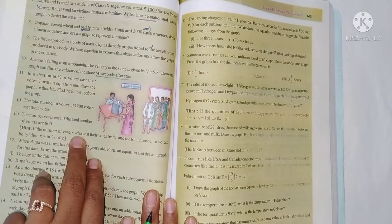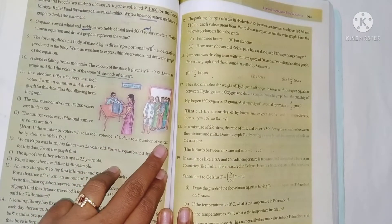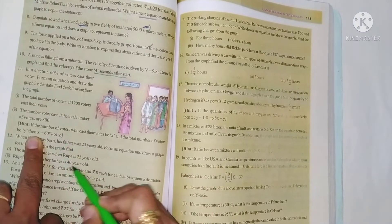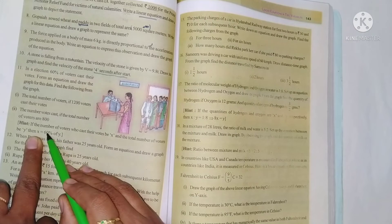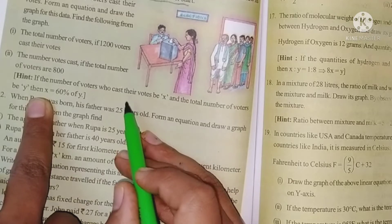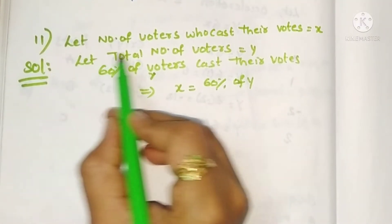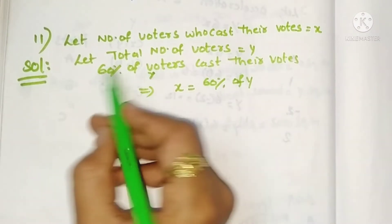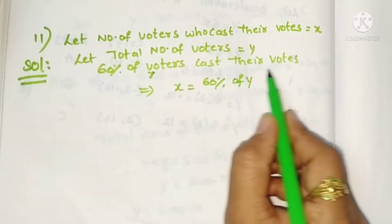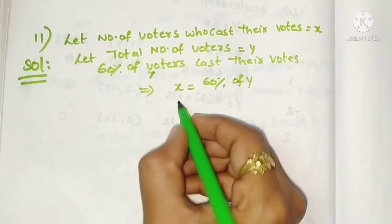If the number of voters who cast their votes be x and the total number of voters be y, then 60 percent of people are casting their votes. So x is equal to 60 percent of y. Let number of voters who cast their votes be x, and let total number of voters be y. So x equals 60 percent of y.